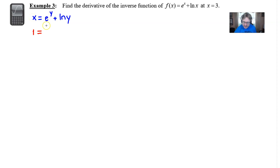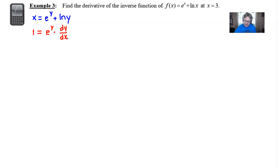Now the derivative of e^y — under normal circumstances we would get e^y, but because we're differentiating with respect to x, you multiply that by dy/dx. That's just your typical implicit derivative approach. Then add, and the derivative of ln(y) is 1/y, and once again multiply that by dy/dx — and you've got your derivative.